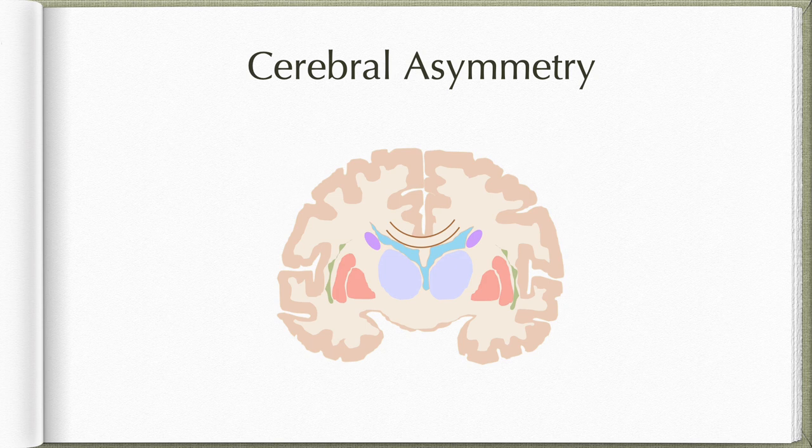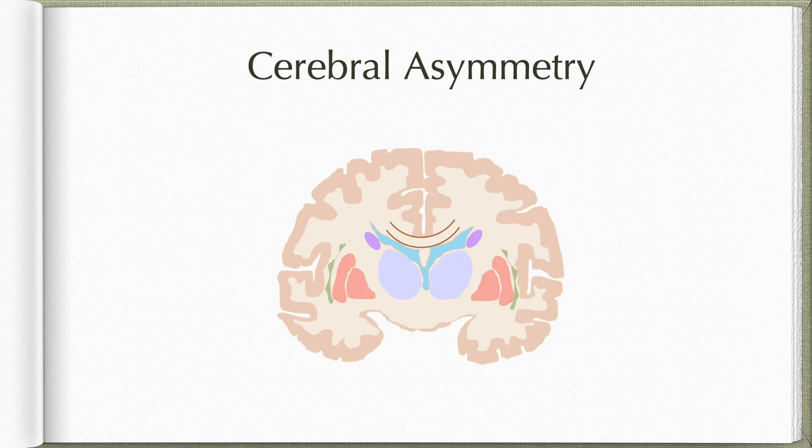We know that the left cerebral hemisphere controls the activity of the contralateral half of the body — that is, the right half of the body — and the right hemisphere likewise controls the activities of the left half of the body. So the left hemisphere receives information about the right half of the visual field, and the right hemisphere receives information about the left half. But this is just distribution of functions — this is not what we mean by cerebral asymmetry.